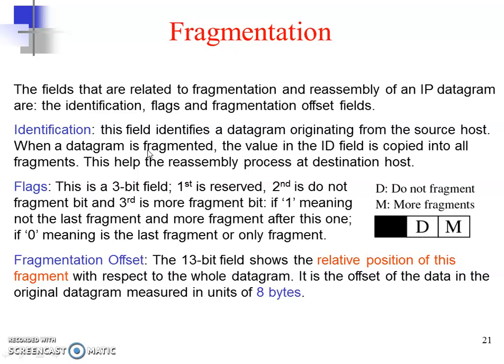The identification field identifies the datagram. Its value is copied into all fragments so that at the destination you can reassemble the fragments having the same identification number into a single datagram. The concept is similar to identifying students by division — if a roll number has the letter K, you know they belong to division K and can be grouped accordingly.